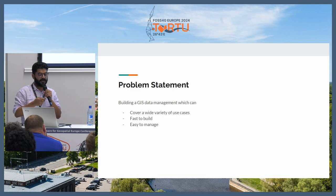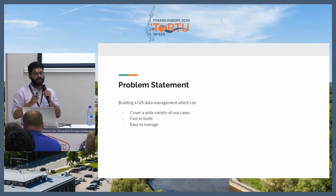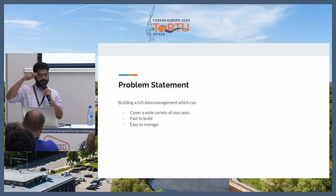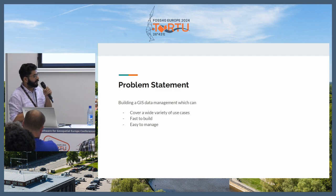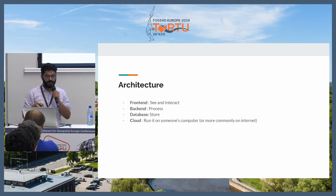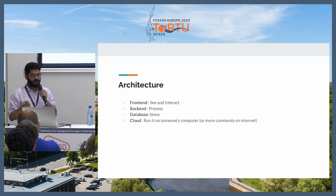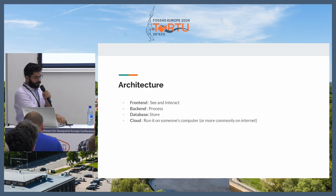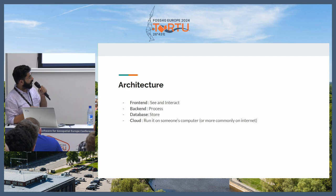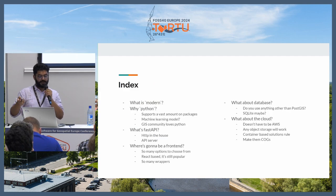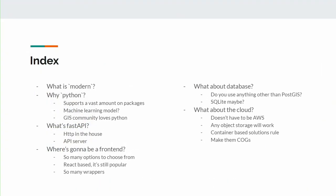A lot of the concepts from general data management systems also apply when working with GIS data — both industries come together. The problem statement is: how to build such a system, what are the different concepts involved, how you can tackle them. It's a generalized approach covering a wide variety of use cases, designed to be fast to build and easy to manage. The components are front end, back end, database, and cloud.